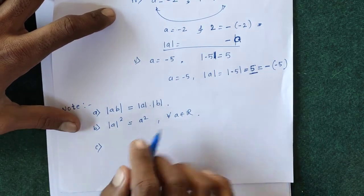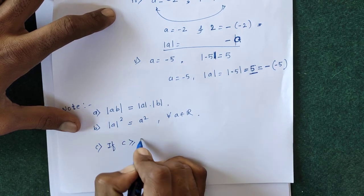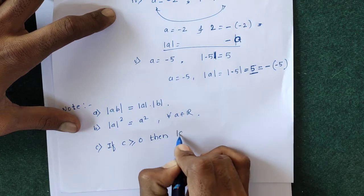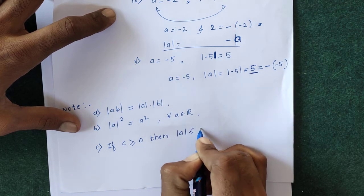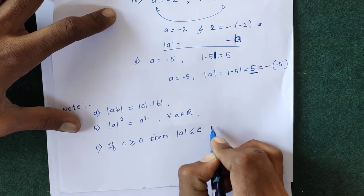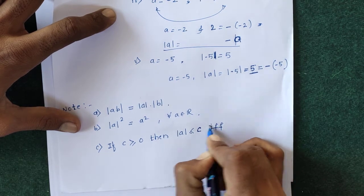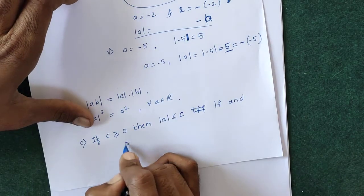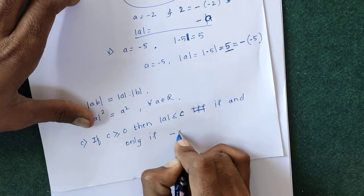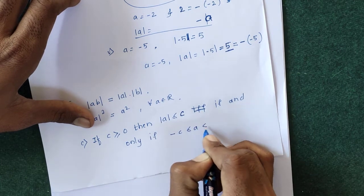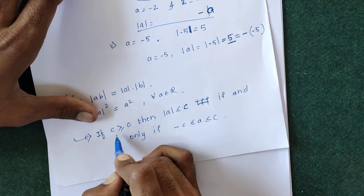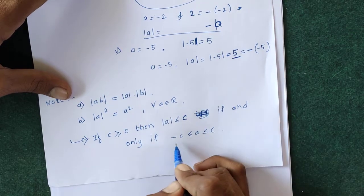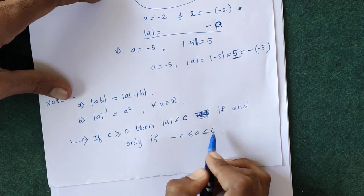The third property is: if c is greater than or equal to 0, then mod a is less than or equal to c if and only if minus c is less than or equal to a is less than or equal to c. This is an important property.